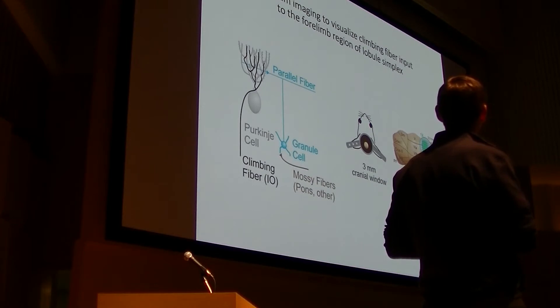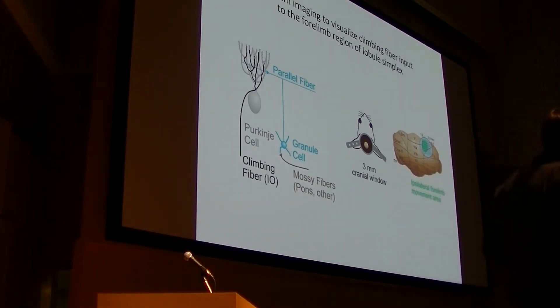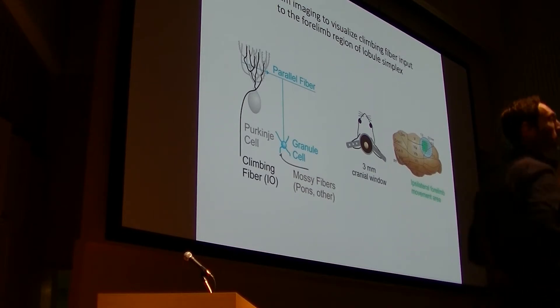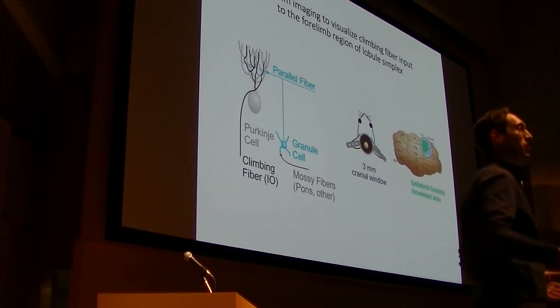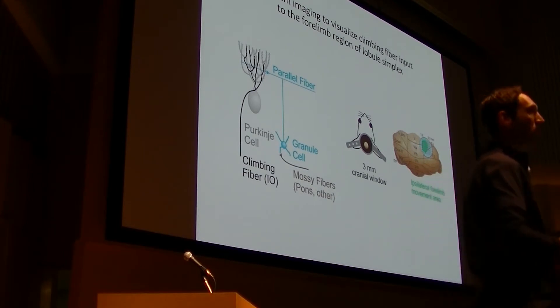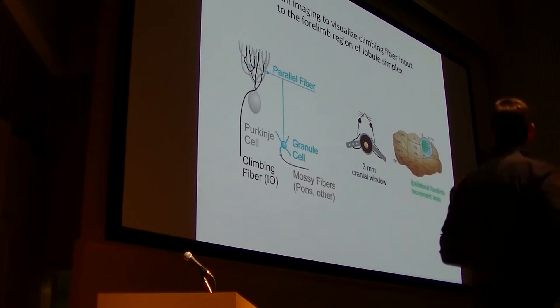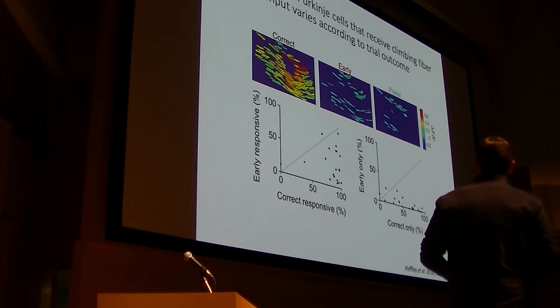So we're going to be looking at a very specific region of the cerebellum, an area of the dorsal surface of lobule simplex. This is an area where we have optogenetically mapped the dorsal surface of the cerebellum, and we empirically identified a region in here which is causally related to the production of forelimb movements. In other words, when we inhibit the Purkinje cells here, we can drive ipsilateral forelimb movements. And in this very specific region where we use glutamate receptor antagonists locally, we can impair the animal's ability to learn in our task without impairing their ability to manipulate the lever. So this is where we're going to be looking at climbing fiber activity.